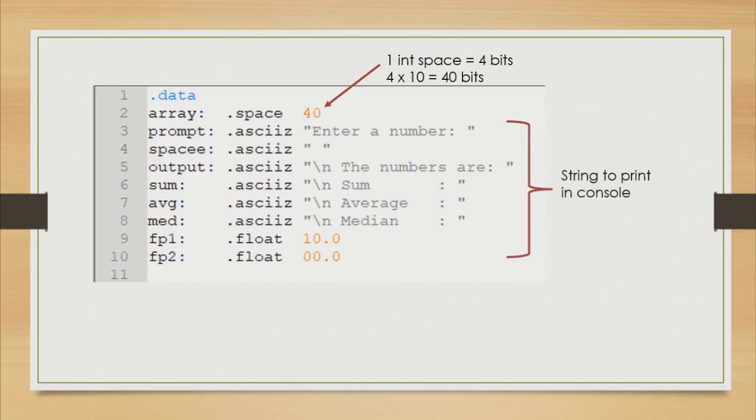To print the string, we use dot asciiz as data type and put the string within the quotation braces after the data type as the value. Data type float is the value that we are going to use later.